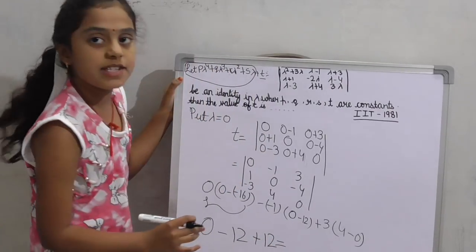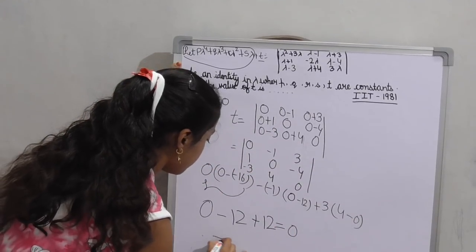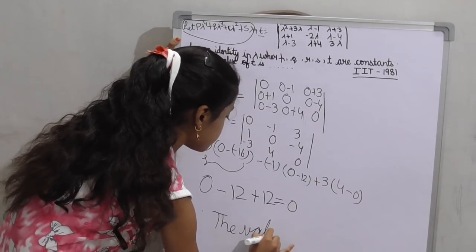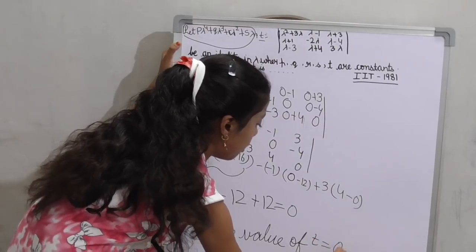Minus 12 plus 12 equals 0. Therefore, the value of T equals 0.